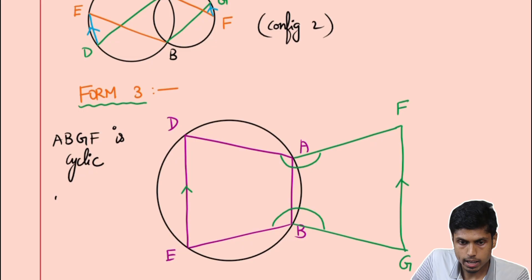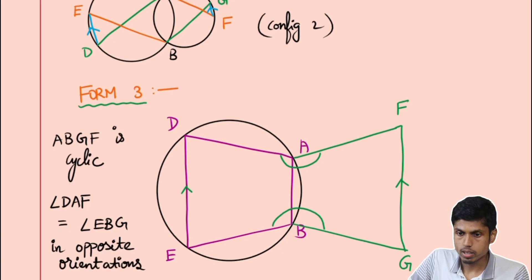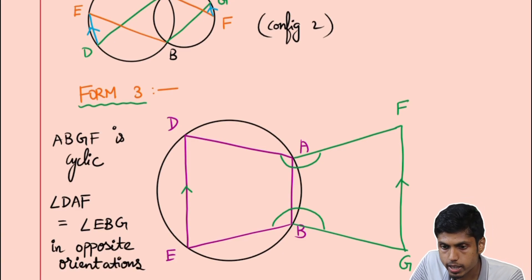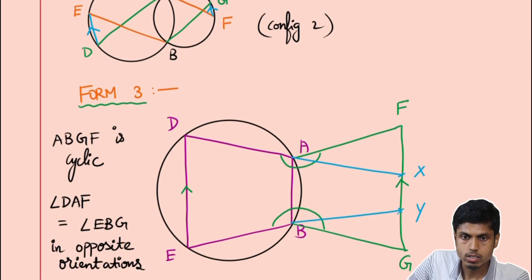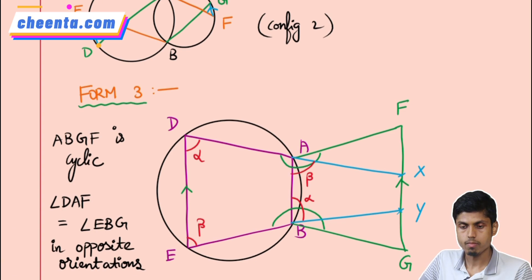So here we have to consider angle DAF being equal to angle EBG in opposite orientation. Suppose I extend DA to intersect FG at X and extend EB to intersect FG at Y. And let's call the angle at D to be alpha and at E to be beta, and I get angle at B to be alpha and angle at A to be beta.